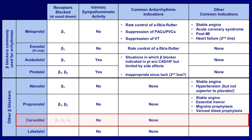Next, carvedilol blocks beta-1, beta-2, and alpha-1 receptors. It is the first-line beta-blocker for treatment of heart failure. And last is labetalol, which, like carvedilol, blocks beta-1, beta-2, and alpha-1 receptors. Labetalol is occasionally used for hypertension. In my experience, I see it more commonly used for treatment of hypertensive urgency and emergency among inpatients than as chronic treatment among outpatients, but I don't know if that pattern holds true in other places.